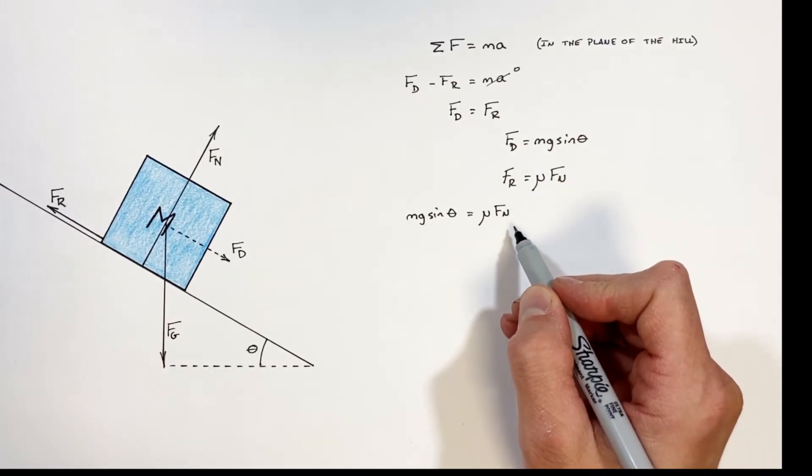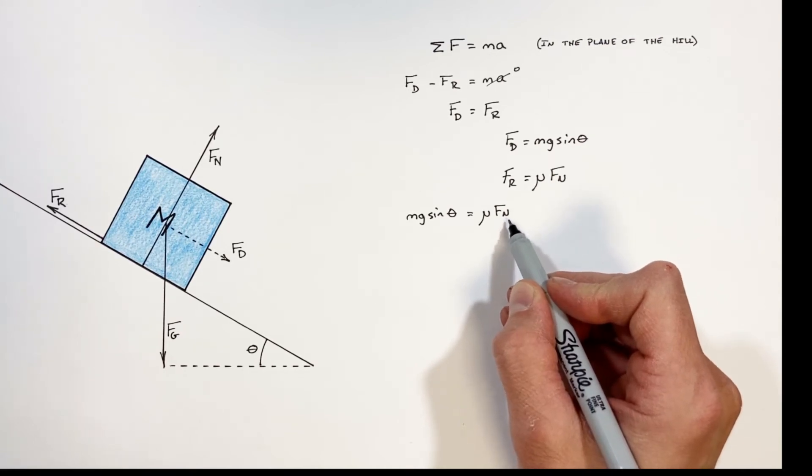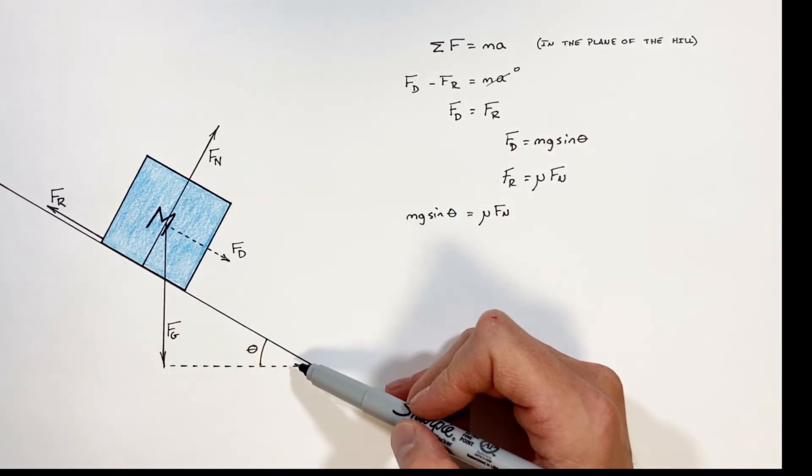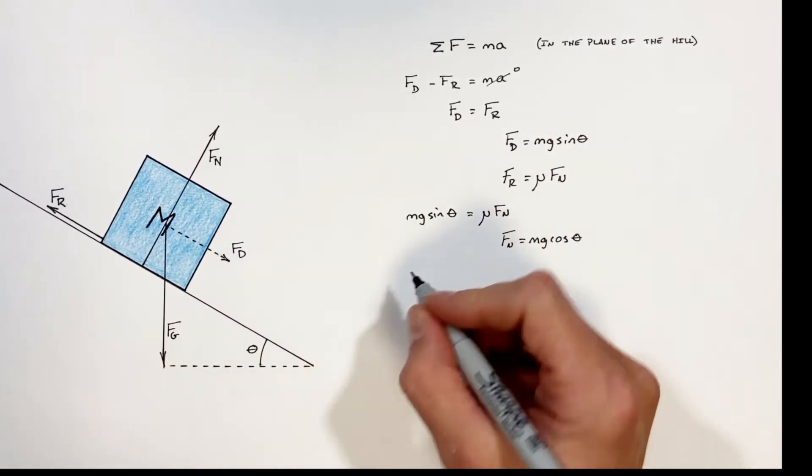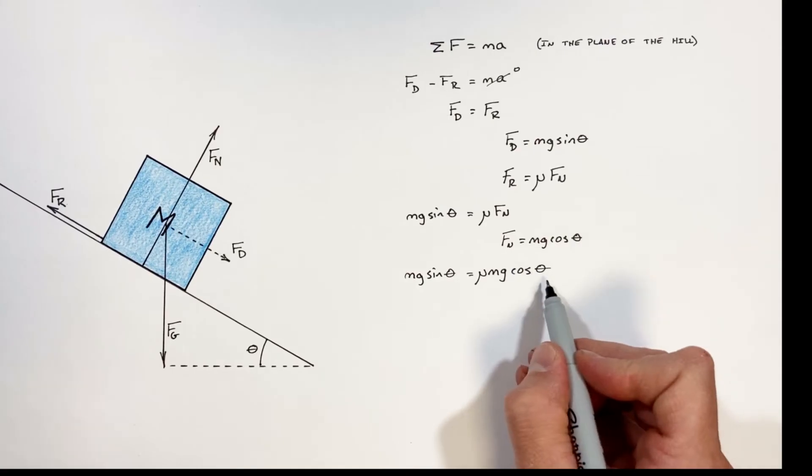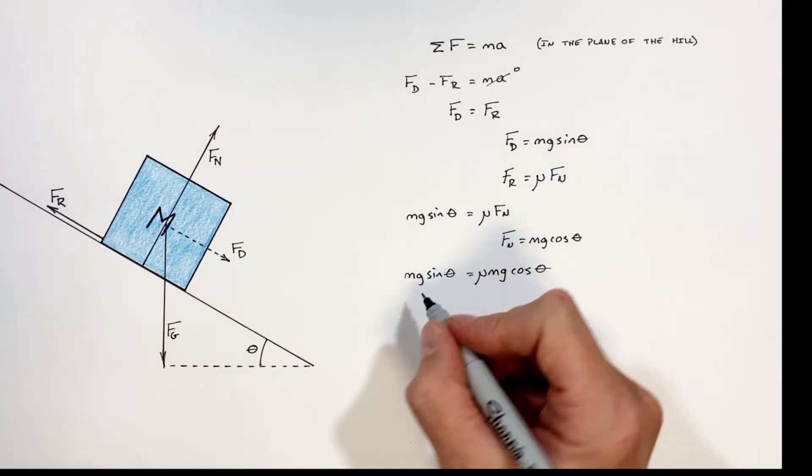Now realize the trick in this problem is realizing that fn can also be expressed as a function of the angle of the hill and the mass of the block. So substituting this term in here, we get this term, and you'll see mg cancels out on both sides.